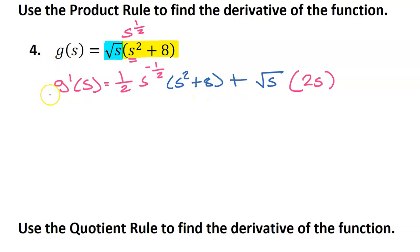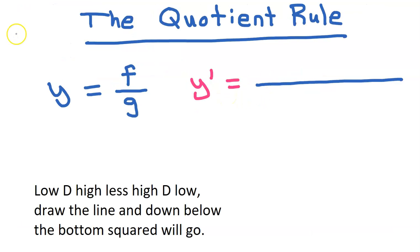I'm writing all of my derivatives in red, and the part that I'm leaving alone I'm writing in blue. So actually this is the answer — that's it for number four. For the next problem, we will need the quotient rule to find the derivative. But what is the quotient rule?